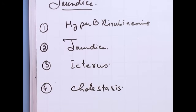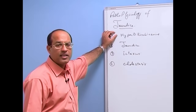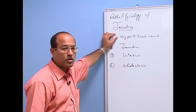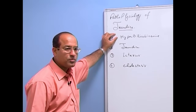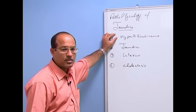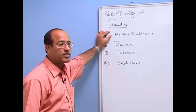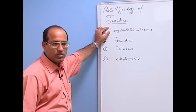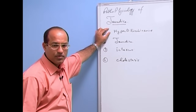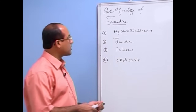First of all, we must know that bilirubin is produced mainly during the breakdown of RBCs and other hemoproteins. Bilirubin is a highly toxic molecule, and because it is constantly being produced in our body whenever RBCs and hemoproteins are breaking down, these toxic molecules are daily produced about 0.2 to 0.3 grams per day. So this bilirubin should be pushed out of the body.